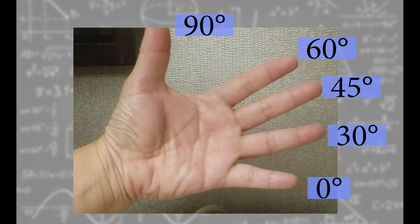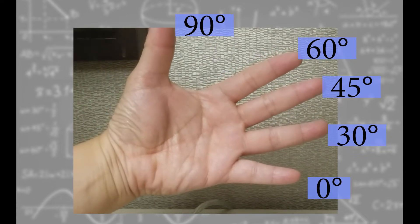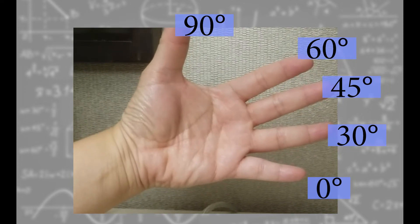These are the angles corresponding to the fingers. From bottom, 0, 30, 45, 60, and 90.